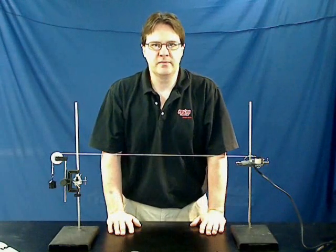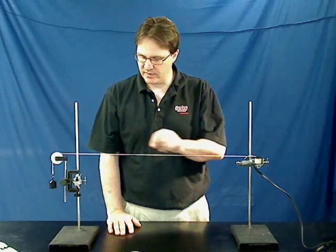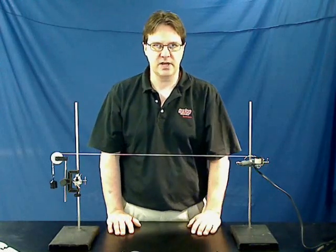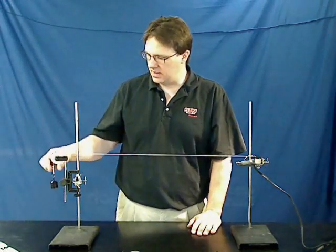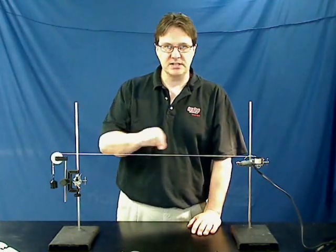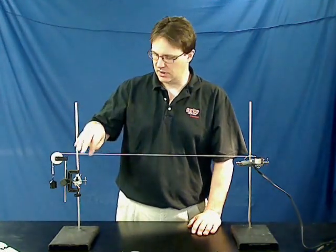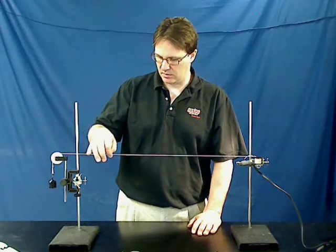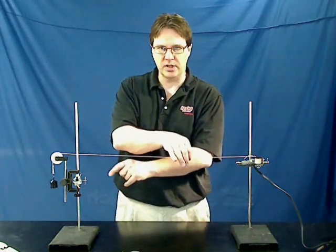In this activity, students will investigate how the velocity of a wave on a string is affected by various factors, including the tension in the string represented by the mass on the end, the linear density of the string, and the distance between the string vibrator and the pulley.